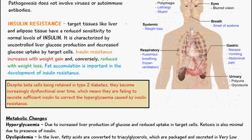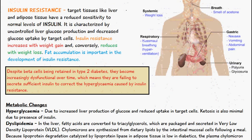A quick note regarding the beta cells of the islets of Langerhans in the pancreas. Despite the beta cells being retained in type 2 diabetes, they become increasingly dysfunctional over time, which means they are failing to secrete sufficient insulin to correct the hyperglycemia caused by insulin resistance.